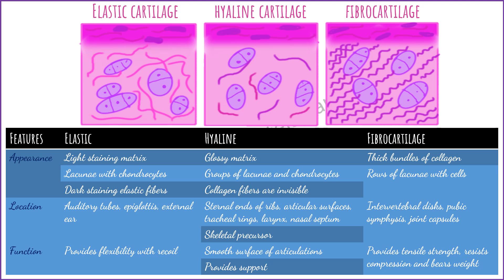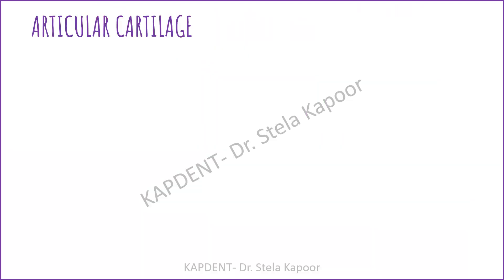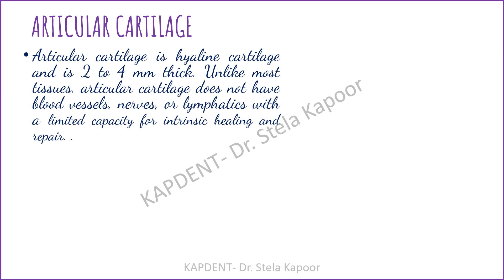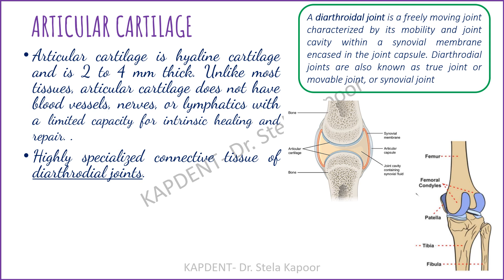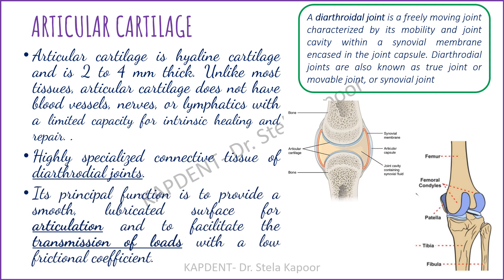The important cartilage for this video is hyaline cartilage, since we are discussing condylar cartilage which covers the articulating surfaces of the temporomandibular joint. This brings us to articular cartilage, a type of hyaline cartilage usually 2 to 4 mm in thickness. It has no blood vessels, nerves, or lymphatics, and has limited capacity for intrinsic healing. It is found on diarthroidal joints — freely movable joints with a joint cavity within a synovial membrane encased in a joint capsule, such as the knee joint with its femoral condyles.